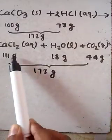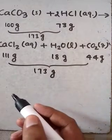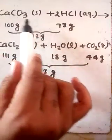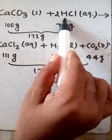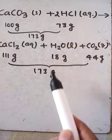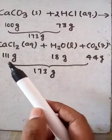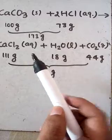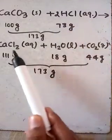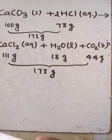One molecule of calcium carbonate reacts with two molecules of HCl to give one molecule of CaCl2, one molecule of H2O, and one molecule of CO2. This information is given to us by the significance of chemical equations. Also, one mole of CaCO3 reacts with two moles of HCl to give one mole of CaCl2, one mole of H2O, and one mole of CO2.